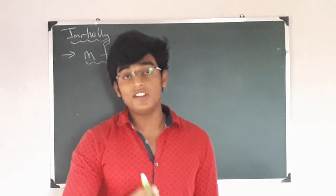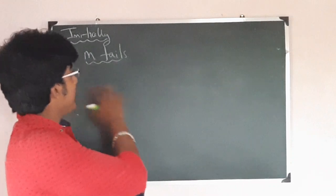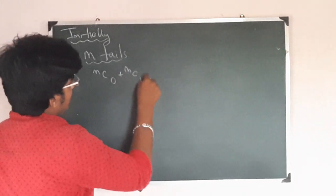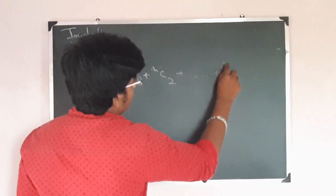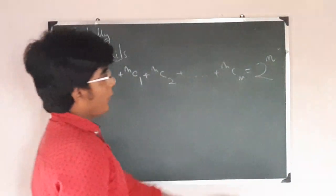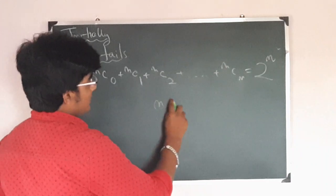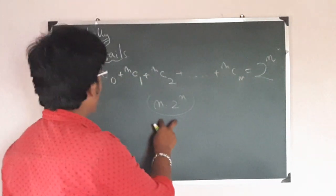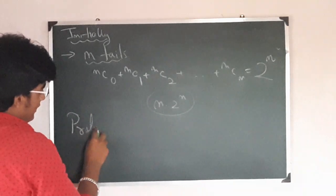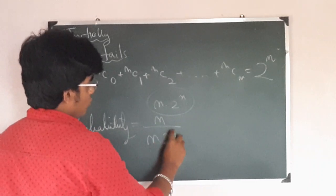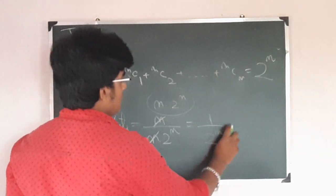Let us find out the total number of combinations of coin flippings we can get for N number of tails. We can get 0 tails, 1 tail, 2 tails, and so on. This sum evaluates to 2^N. The total points of this complete combination must be N times 2^N. So the probability in this case is N upon (N times 2^N), which is 1 upon 2^N.